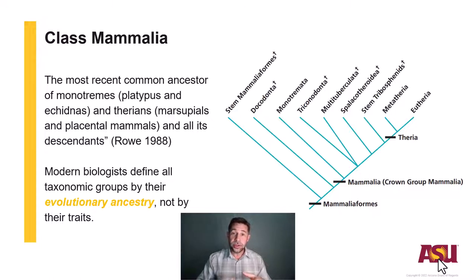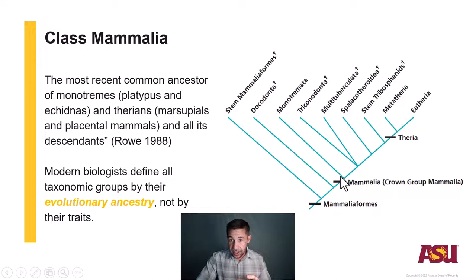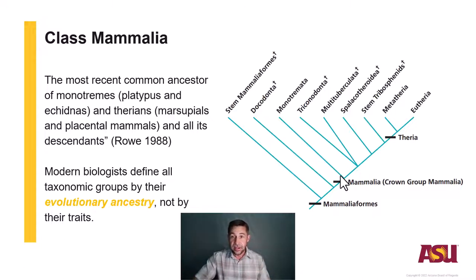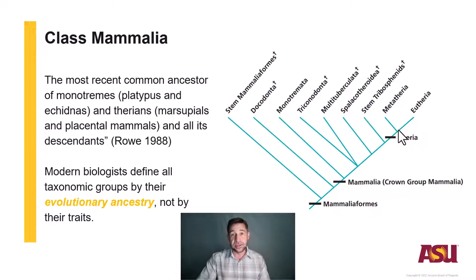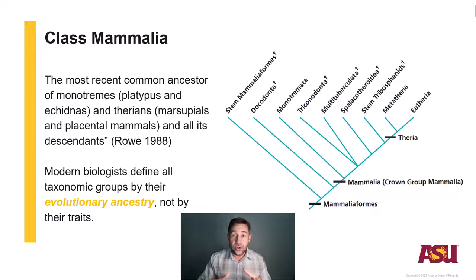In ABS 470 we're going to define the class Mammalia following Row 1988 as the most recent common ancestor of the monotremes — which are the duck-billed platypuses and the spiny echidnas — and the theria, which includes the metatheria, or the approximately 272 species of marsupials, as well as the true therians or the eutheria. 'Eu' means true, which encompasses all of those placental mammals as well as all of the extinct lineages.